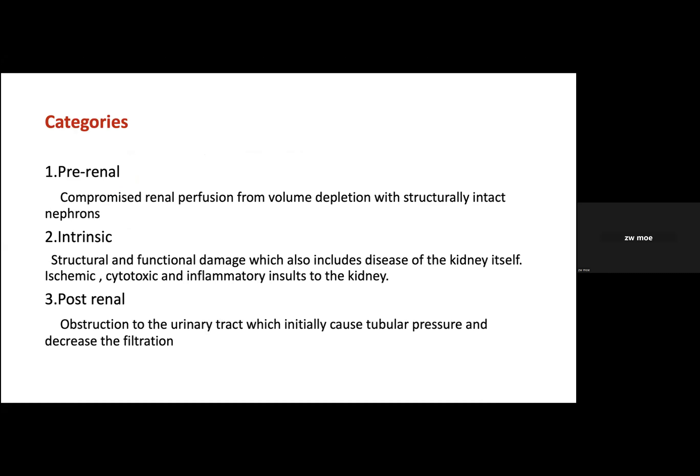We can differentiate acute kidney injury into three categories: pre-renal, intrinsic renal cause, and post-renal. In pre-renal AKI, the kidney is structurally fine; however, because of volume depletion or hypotension, it compromises renal blood flow and damages the kidney. For intrinsic renal cause, it can be kidney disease or various insults — ischemia, cytotoxic injury, or inflammatory insult — damaging tubules, glomeruli, causing structural and functional changes. Post-renal is simply obstruction from any cause: stones, tumor, BPH, or retroperitoneal fibrosis.